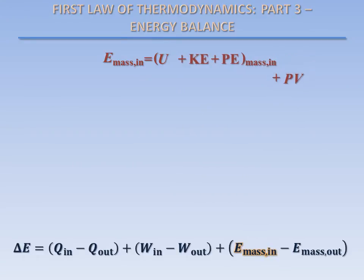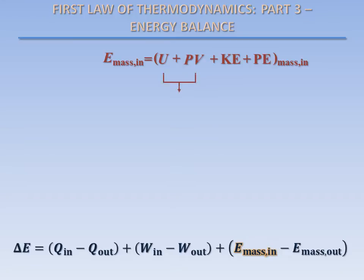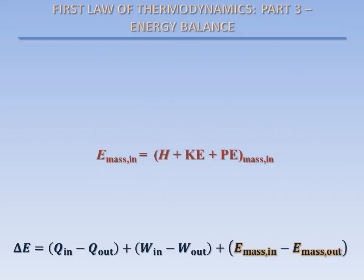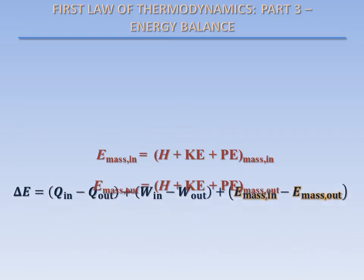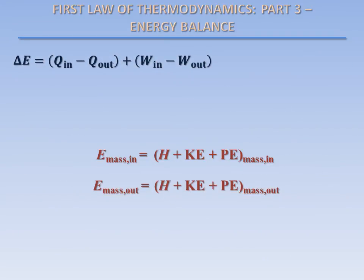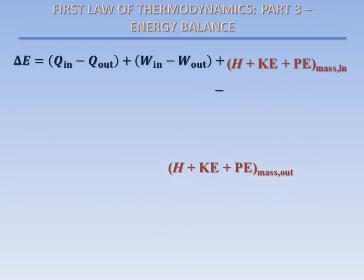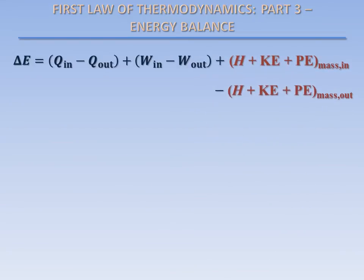We can rearrange this expression as follows. The internal energy of this mass and the flow energy required to push it into the system can be combined to form a new property, denoted by the letter H. This property is called enthalpy. We can write the total energy contained in the mass that has entered our system in terms of enthalpy. A similar analysis can be performed on the mass flowing out of the system.